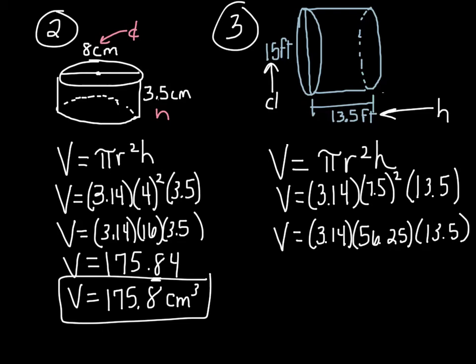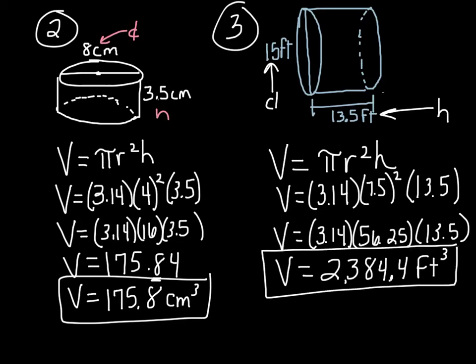Now we just multiply all three numbers together. 3.14 times 56.25 times 13.5 gives us, on your calculator, it will look like 2,384.4375. If we round it to the nearest tenth, that is 2,384.4, and your answer is going to be cubic feet. And there's your answer.